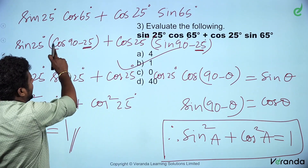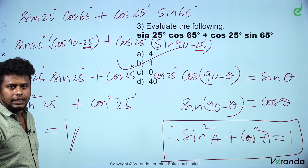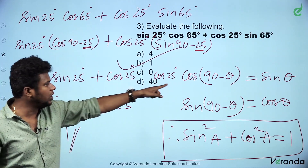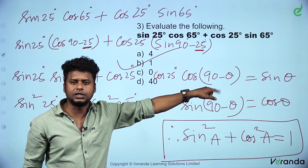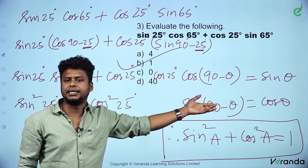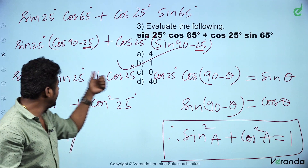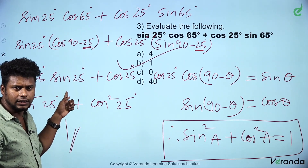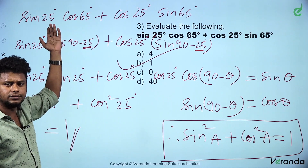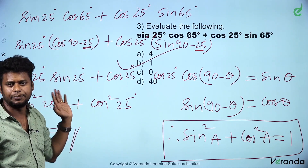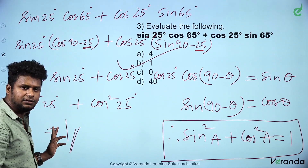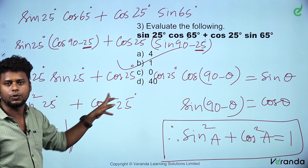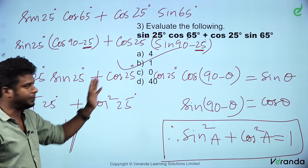So if we substitute 65°, that is 90° minus 25°. Using cos(90° minus θ) equals sin θ and sin(90° minus θ) equals cos θ, where θ is 25°, cos becomes sin and sin becomes cos. So sin²25° plus cos²25° equals 1. Answer is 1.